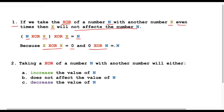And XOR of a number with zero will keep the number unchanged. The second point is: taking XOR of a number N with another number X will either decrease the value of N or not affect it — it will not increase it beyond what XOR provides.